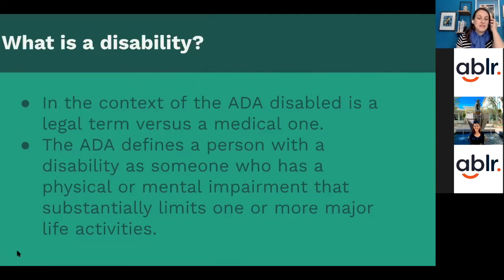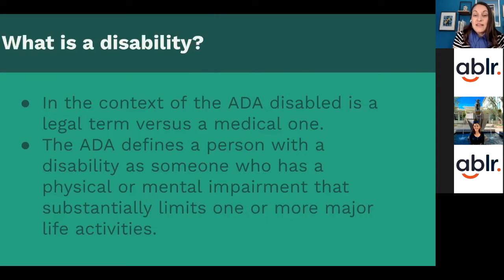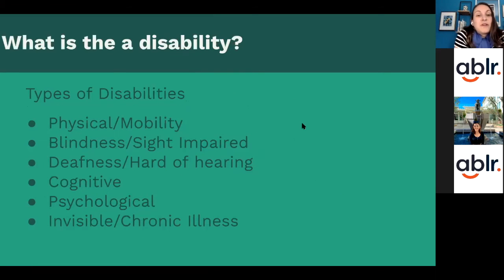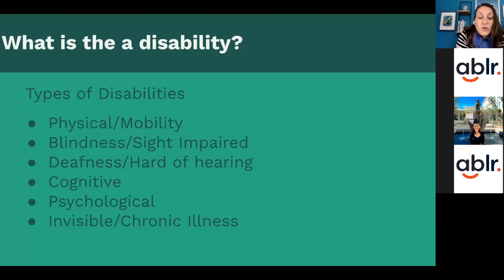What is a disability? Today we're using the context of the ADA to define it. In the context of the ADA, 'disabled' is a legal term versus a medical one. The ADA defines a person with a disability as someone who has a physical or mental impairment that substantially limits one or more major life activities. There are different types of disabilities, and here I've put six categories: physical and mobility disabilities, blindness or sight impaired, deafness or hard of hearing, cognitive disabilities, psychological disabilities, and lastly, invisible or chronic illnesses.